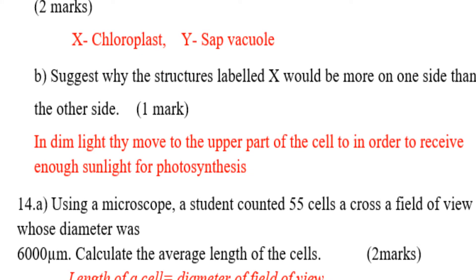Question B: Suggest why the structures labelled X would be more on one side than the other. Why is it that on one side you can find a lot of chloroplasts? This is because in dim light, they move to the upper part of the cell in order to receive enough sunlight for photosynthesis.